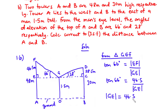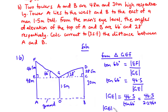Rearranging, GE equals 46.5 divided by tan 66 degrees, which equals 20.70 meters. Therefore the distance GE equals 20.70 meters, and this is equal to the distance AO. So the distance AO is 20.70 meters.